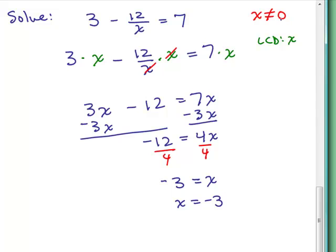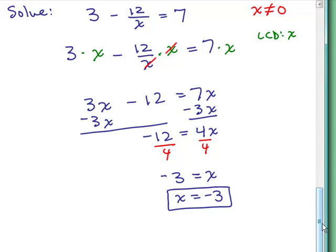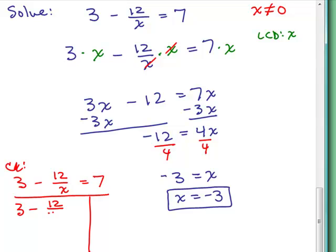Now, notice up here at the beginning, I said x cannot be 0, and I didn't get 0. So that's hopefully the correct answer. And we would just want to check that in the original. So let's check it in the original. We had 3 minus 12 over x equals 7. And we're going to put in negative 3 for x. So I have 3 minus 12 times negative 3 on the left-hand side of the equation. And so that becomes 3 minus negative 4, which would be plus 4, which is 7. On the right side, it's already simplified. We've got 7. So x equals negative 3 is the correct solution. And if I put that using braces, I can get negative 3.